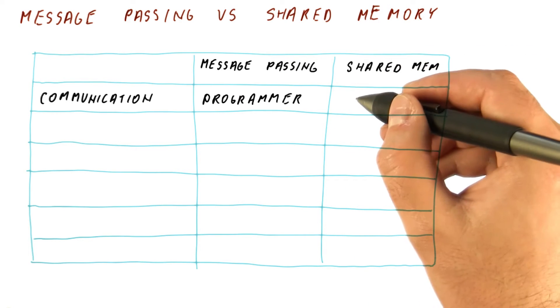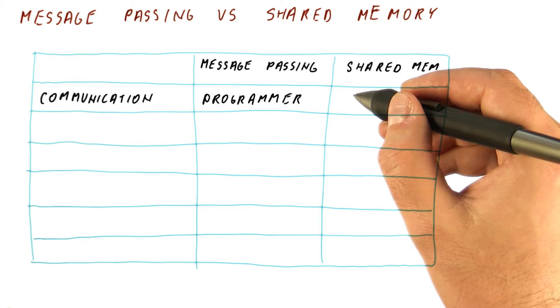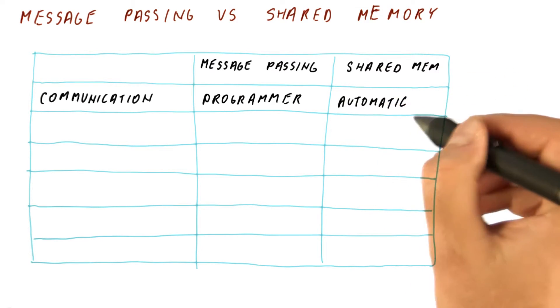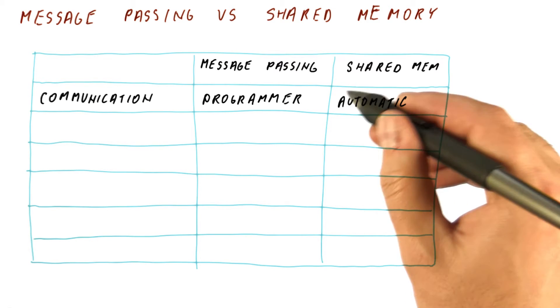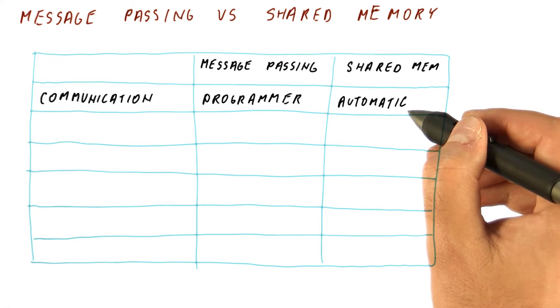In shared memory, the communication is happening through shared variables in memory. So all of the actual sending of the data back and forth is fully automatic. The programmer doesn't need to do that. They just store to memory and load from memory and it is the responsibility of the system to figure out when the data gets sent and to whom.